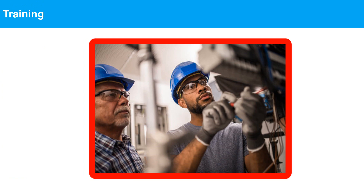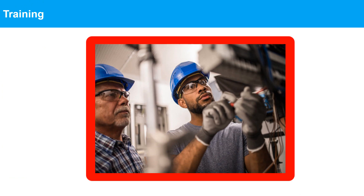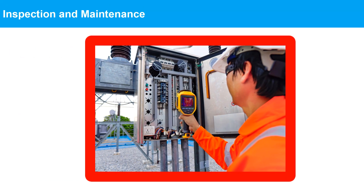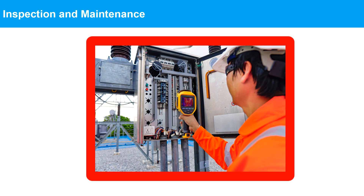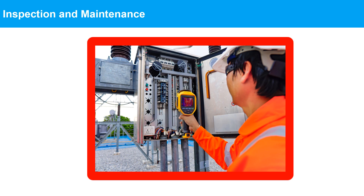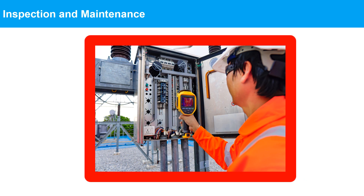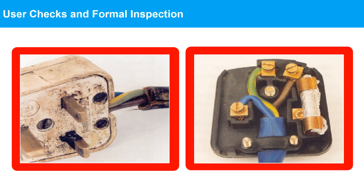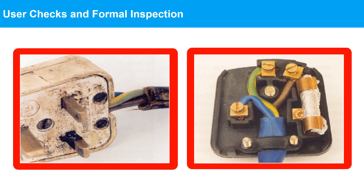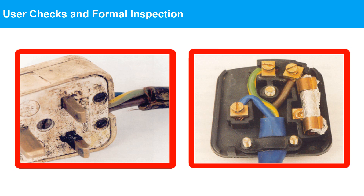Training is of utmost importance as it equips workers with the necessary knowledge and skills to identify and mitigate electrical hazards, ensuring a safe working environment. Electrical installations and equipment should be routinely inspected to ensure electrical safety, including equipment installed in buildings, larger fixed equipment, and smaller portable appliances. There may also be national requirements governing the inspection of electrical installations or requirements imposed by insurance companies. All electrical installations, equipment, and appliances should be subject to user checks, formal inspection, and combined inspection and testing to ensure electrical safety.